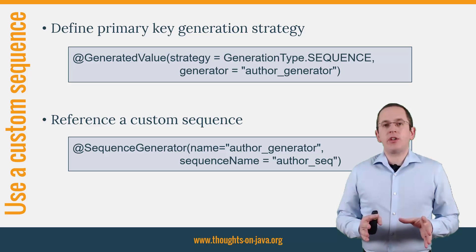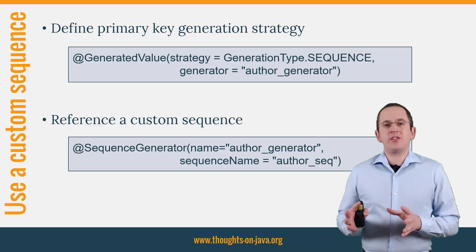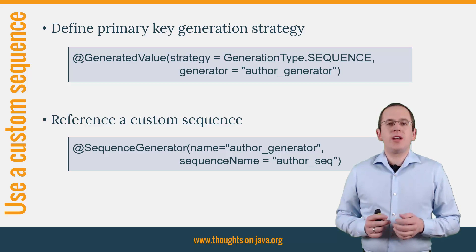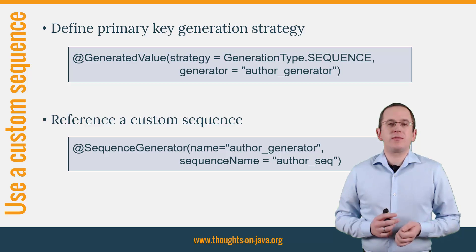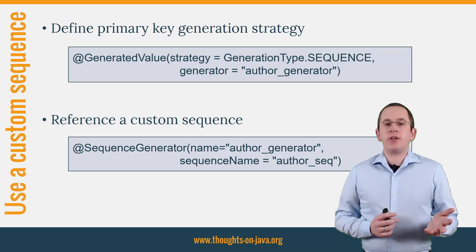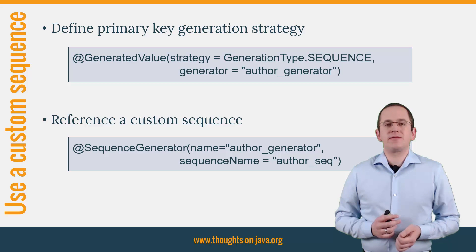I want to use a custom sequence and therefore use the generation type SEQUENCE. I also tell Hibernate to use the generator called 'author generator'. If you don't specify a generator, Hibernate will use its default sequence generator.